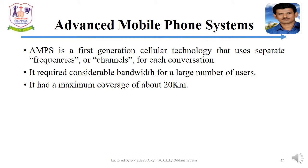Advanced Mobile Phone Systems, AMPS, is a first generation cellular technology that uses separate frequencies or channels for each conversation. It required considerable bandwidth for a large number of users and had a maximum coverage of about 20 kilometers.